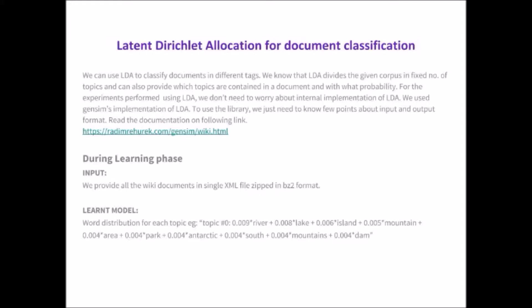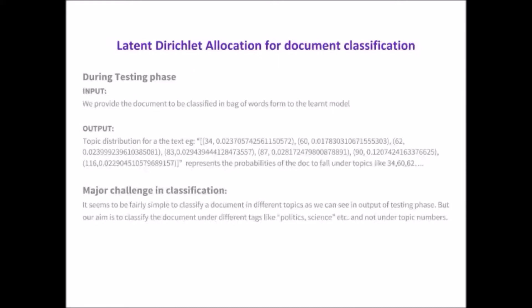During learning phase we just provided all the documents in a zip format and it learns all the topics. Each topic is represented by words with associated probabilities as shown in the example. For testing we just provided the text to classify and it returns the topic and probabilities for the document to belong to that topic.